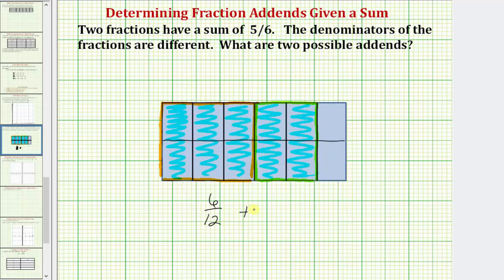Plus one, two, three, four-twelfths, which again we now know has a sum of five-sixths.